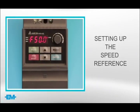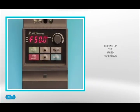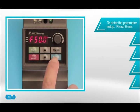Firstly, we are going to set up the speed reference. To enter the parameter setup, press enter. When you press enter, the display will show 00, which is group 0 user parameters.